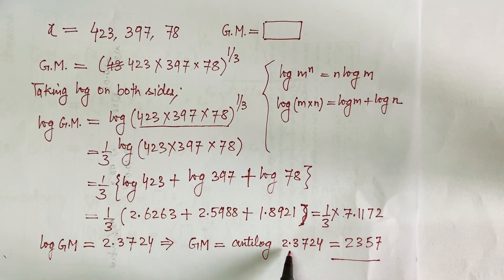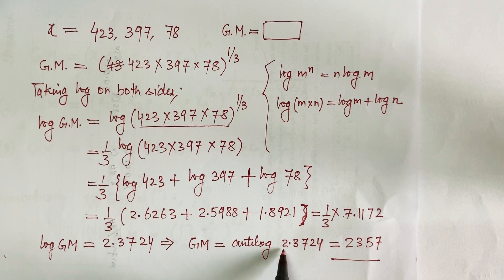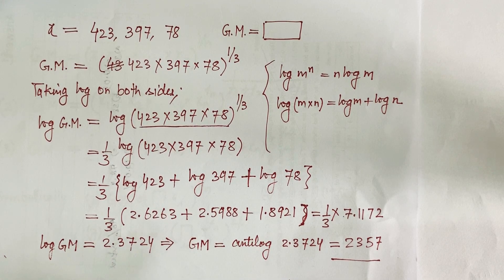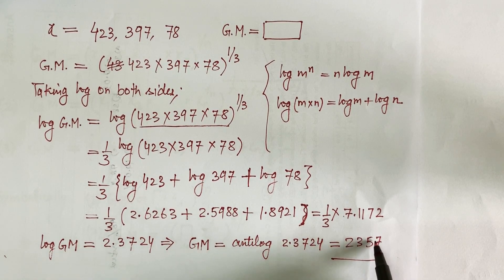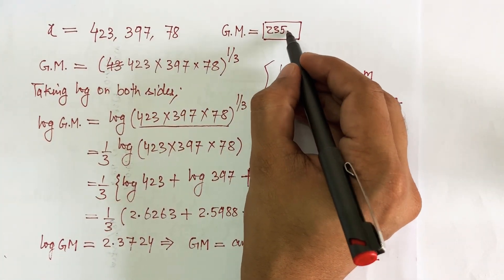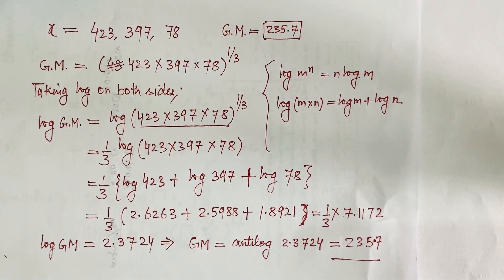Whatever number is on the left side of the decimal, add 1 to it. The number on the left is 2, so 2 + 1 = 3, and I place the decimal counting three places from the left: giving 235.7. So the geometric mean of 423, 397, and 78 is 235.7. Thank you - I'll be doing more problems in future videos.